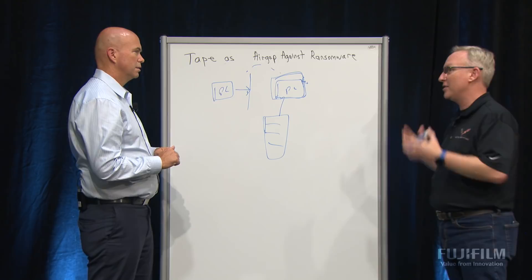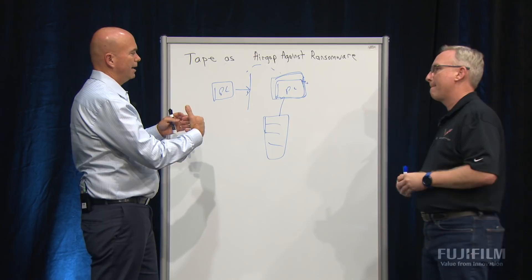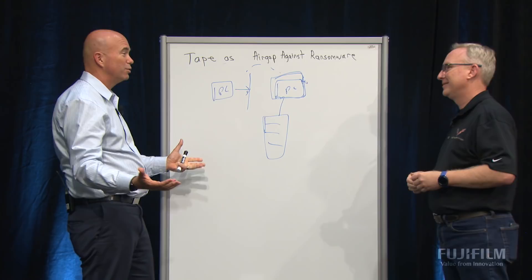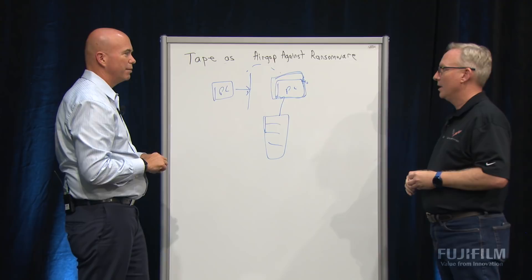Once a ransomware attack is detected, it's going to crawl every file system it can get to, start encrypting data, and introduce you to Bitcoin. But what you're saying is it's hard for it to get to the tape library. Yeah, if it doesn't have a connection via the network anywhere, it can't get anywhere. It's going to be isolated to that.